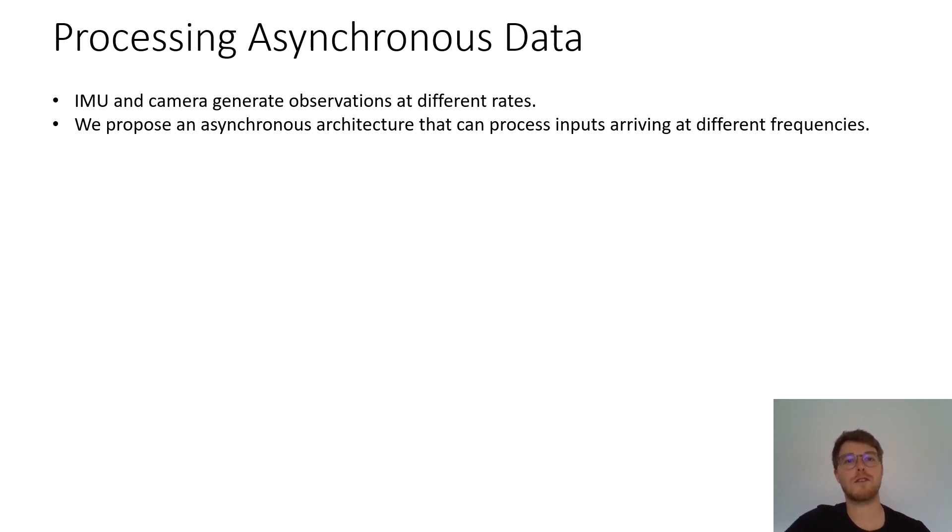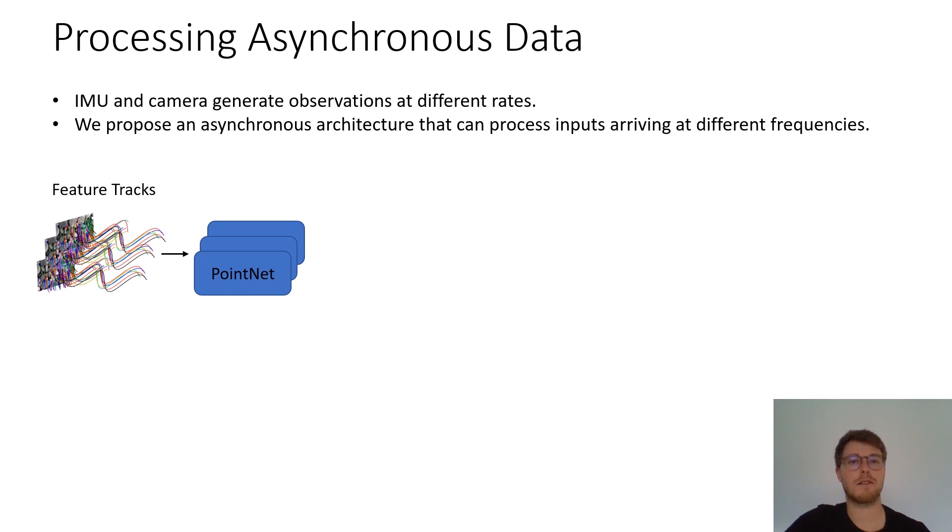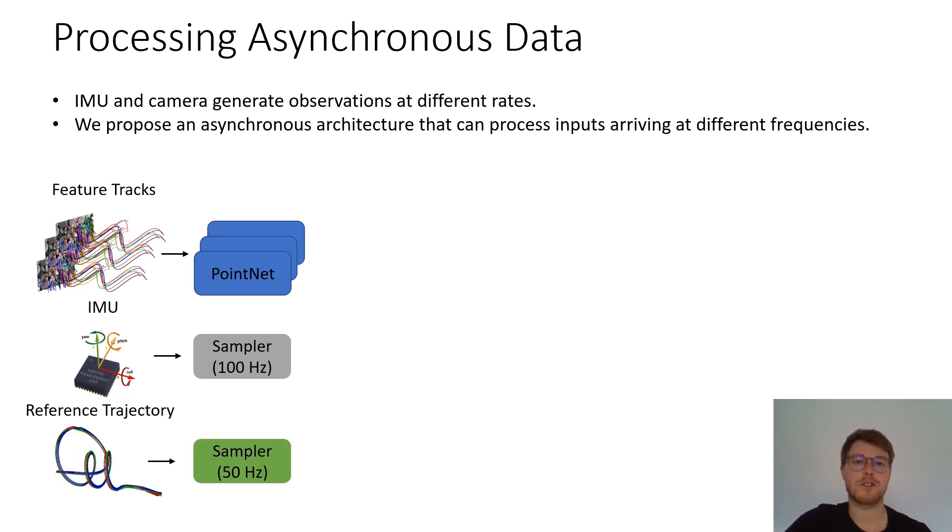Concretely, we feed the following features to the neural network: feature tracks given by a visual front-end, integrated and debiased IMU readings, and a reference trajectory.